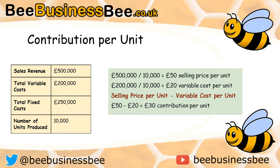Let's start with the contribution per unit. I've taken the sales revenue of £500,000 and divided it by the 10,000 units being produced, which tells me the selling price of every unit is £50. Then I need to find my variable cost per unit: £200,000 divided by 10,000 units gives me £20 cost per unit. Using the formula — and it's really important you write out the formula in any examination question — selling price per unit of £50 minus variable cost per unit of £20 gives a contribution per unit of £30.